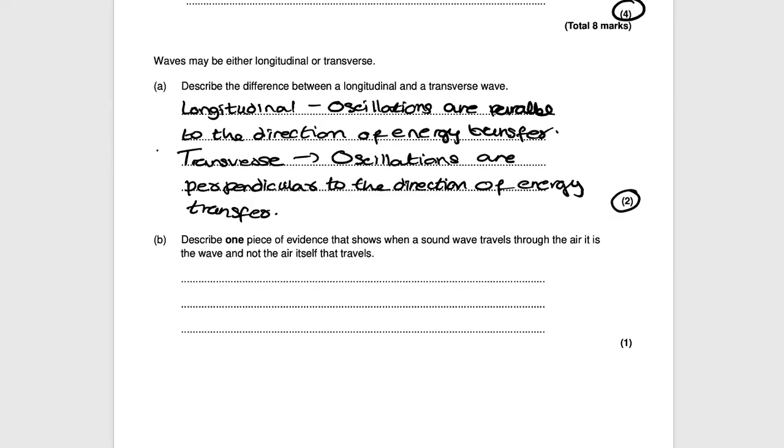Next question says describe one piece of evidence that shows when a sound wave travels through the air, it is the wave and not the air that travels. For this question it's worth one mark. You could have given a lot of examples. If you're shouting through a speaker sound waves come out. If we shouted through the speaker we would hear a blast of air coming out. But we don't hear that. We only hear the sound. We don't see all the air coming right out towards us. That's showing that the air is not moving, it's the wave which is moving. We're hearing that sound wave, we're not feeling the air which is coming out. It's the sound wave which moves.